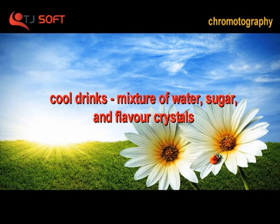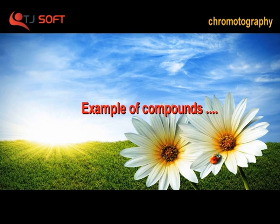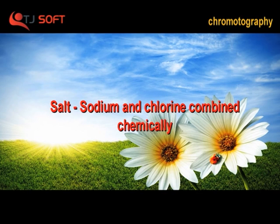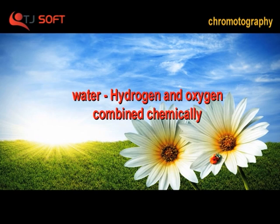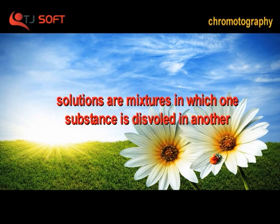Cool rings — mixture of water, sugar, and flavor crystals. Compounds: Two or more elements that are chemically combined. Examples of compounds: Sodium and chlorine combined chemically; Water — hydrogen and oxygen combined chemically; Carbon dioxide — carbon and oxygen combined chemically.